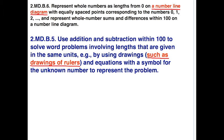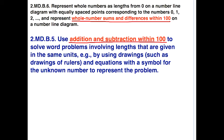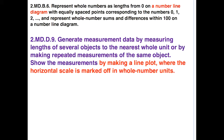A related standard also in second grade is 2MDB5, which is the standard right before this one. The connection is the idea of the number line diagram connecting to 2MDB5 through drawings of rulers. Standard 2MDB5 is also connected to 2MDB6 through the idea of addition and subtraction within 100. Another connection with number line diagrams is standard 2MDB9, which involves making a line plot where the horizontal scale is marked off in whole number units — that corresponds to a number line diagram.